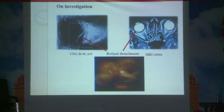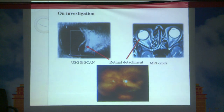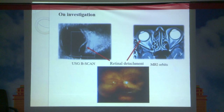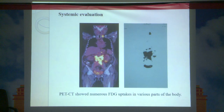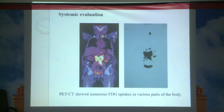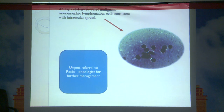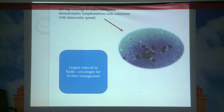B-scan showed retinal detachment and increased retinochoroidal thickness. MRI revealed a hypo-intense choroidal mass on T2 with associated retinal detachment. PET-CT scan showed multiple uptakes of FDG in various parts of the body including cervical lymph nodes. To confirm suspicion of ocular metastasis, an anterior chamber tap was done, which revealed malignant monomorphic lymphomatous cells consistent with intraocular involvement. An urgent radio-oncologist referral was made for further management since the patient was already in a debilitating state.